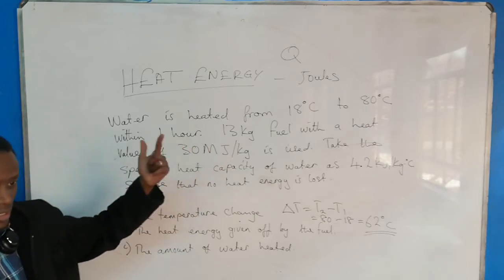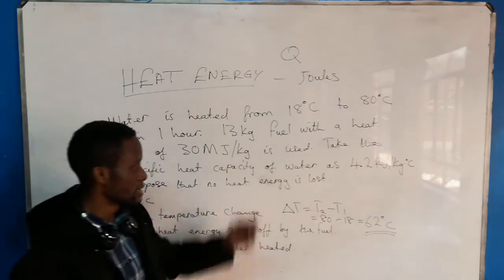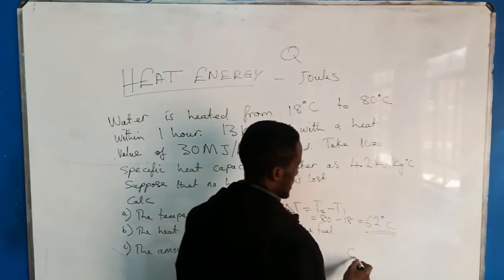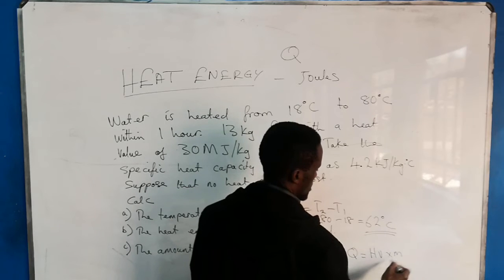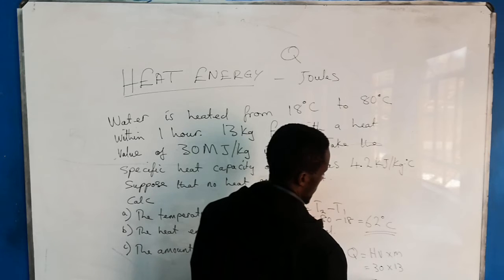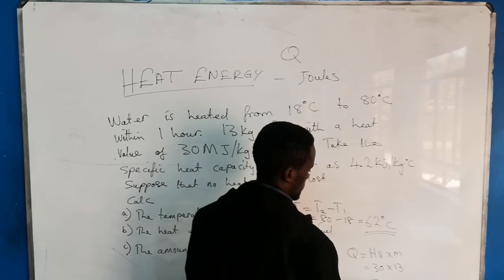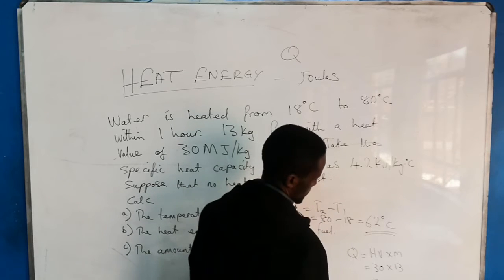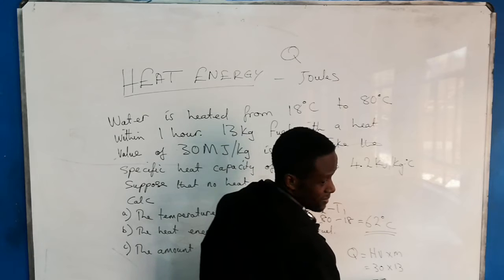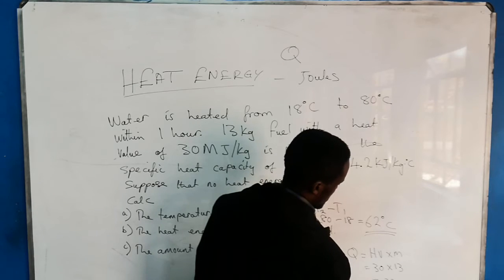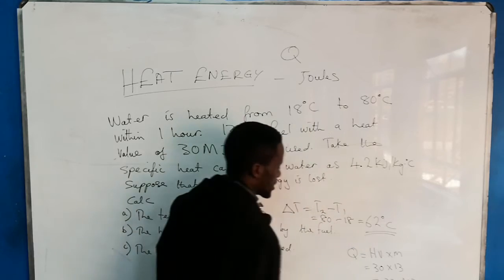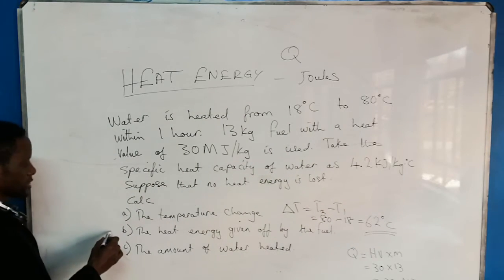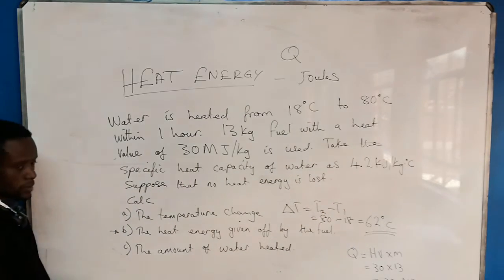1 kg gives 30 megajoules, so 13 of those give us the heat energy: heat value times the mass, which is 30 times 13, and we get 390 megajoules. That is how much energy was given off.